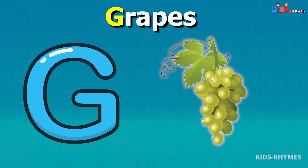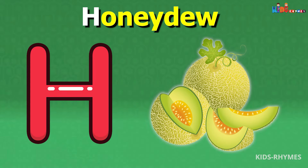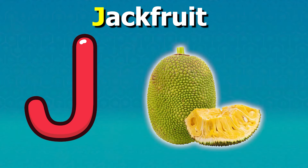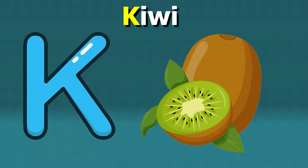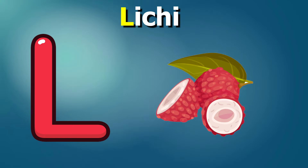G for grapes, H for honeydew, I for iyokan, J for jackfruit, K for kiwis, L for lychees.